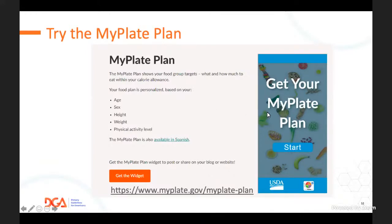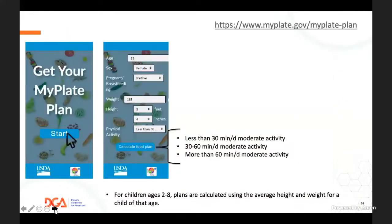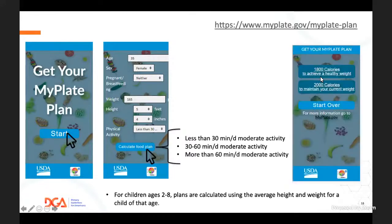There's also an online tool—a widget you can embed on your own website. You can plug in age, sex, pregnancy or breastfeeding status, height and weight, and choose from three physical activity levels: less than 30 minutes, 30 to 60, or more than 60 minutes. For very active military populations, you'd choose more than 60 minutes, though you'd still need to consider the extra calories required. Once you enter that information, it gives you two choices: achieving a healthy weight or maintaining, and then provides specific serving recommendations from each food group.